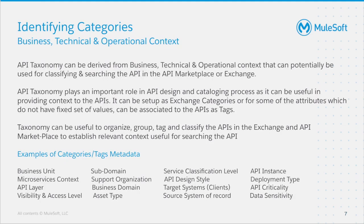You're probably wondering, how do we actually identify categories? Well, API taxonomy can be derived from business, technical, and operational context that can potentially be used for classifying and searching the APIs in the API marketplace or exchange. API taxonomy plays an important role in API design and cataloging process as it can be very useful in providing context to the APIs. It can be set up as exchange categories, or for some of the attributes which do not have a fixed set of values, can be associated to the APIs as tags. Taxonomy can be useful to organize, group, tag, and classify the APIs in exchange and API marketplace to establish relevant contexts useful for searching the API.